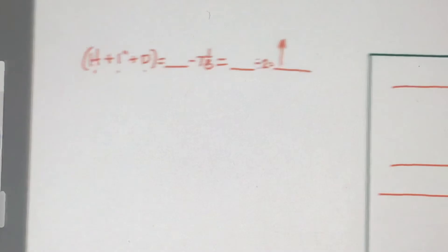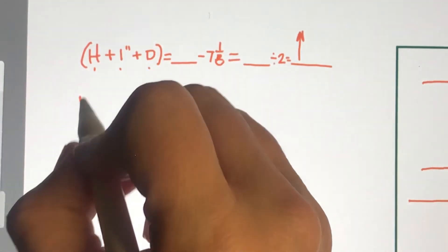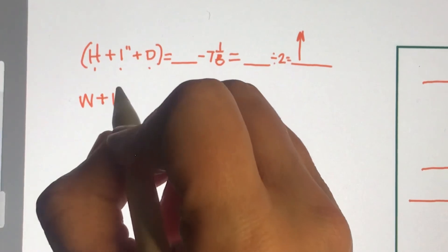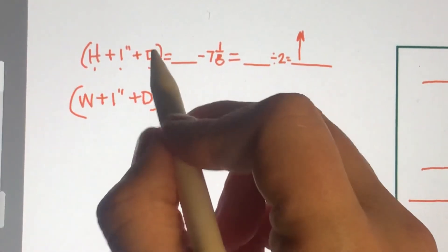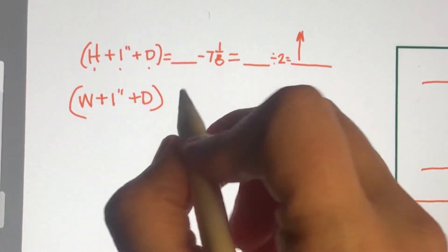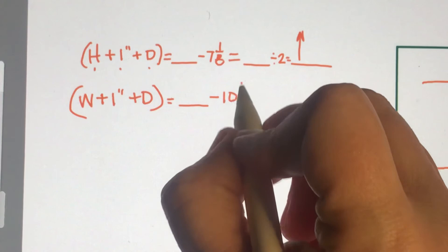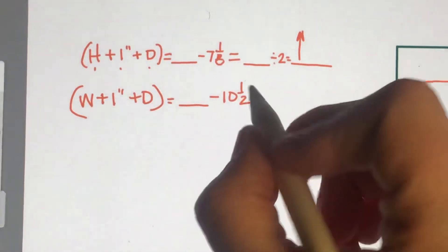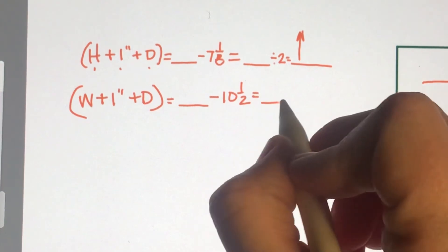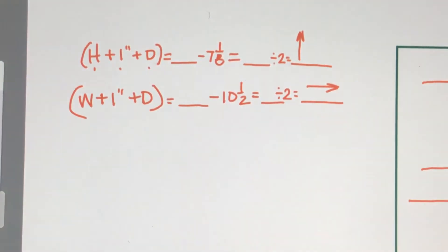So now I'm going to do the second formula, which is the width of the part plus one inch plus the depth of the part. The depth is the same in both formulas. Whatever that equals minus ten and a half - that's how wide my title block is. Whatever that equals, divide it by two, and this is my offset from the side.